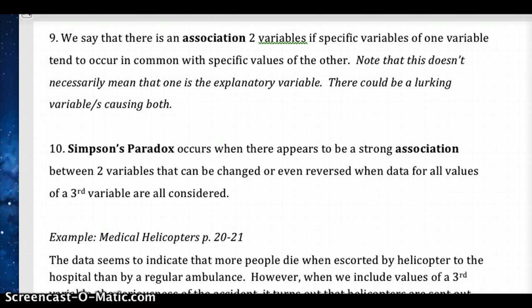When looking at two variables—explanatory and response—an association means values of one tend to occur with specific values of the other. This means we see a pattern: when one increases, the other increases, or when one increases, the other decreases. However, this doesn't necessarily mean one is explanatory and one is response. Consider cases with lurking variables—perhaps both are response variables to another explanatory variable. An association simply means two things that happen together, whether an inverse or linear pattern. You're seeing values of one variable that tend to occur with values of another.